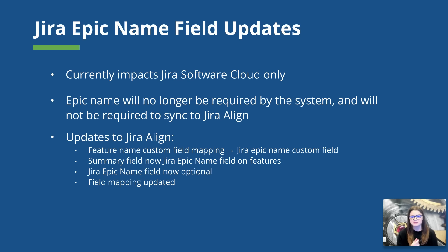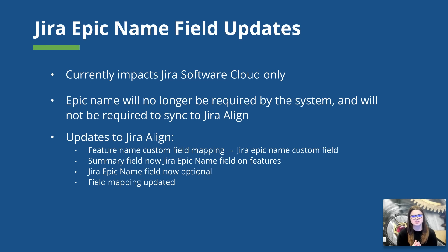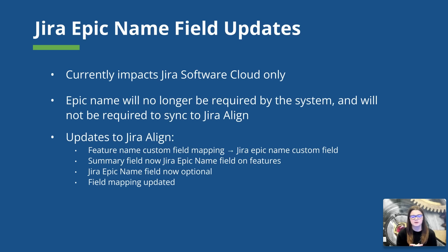The change that is going to have the most impact on Jira Align is that the Epic Name field in Jira Software is going to become optional. At a high level, the changes we are going to see in Jira Align include some naming changes. In the admin settings on the Jira Setup tab, what used to be called the Feature Name Custom Field Mapping is going to now be called the Jira Epic Name Custom Field. Likewise, on the Feature Details panel in Jira Align, what used to be called the Summary Field will now be called the Jira Epic Name Field.